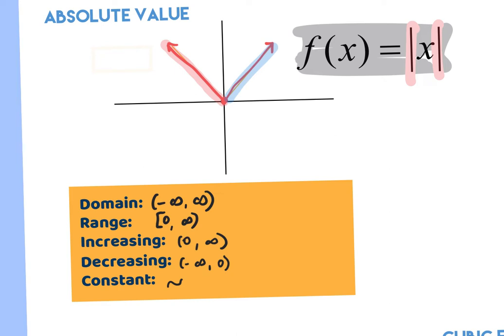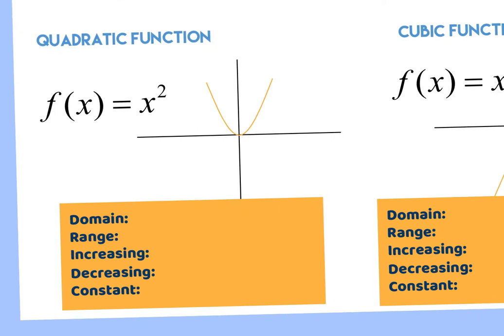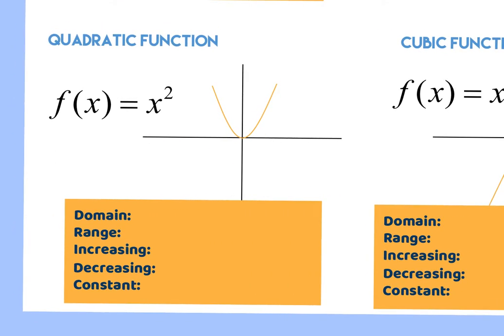Student question: why is there a bracket on the zero for range? Because zero is a point that's on the graph — it's a solid dot. If it was an open dot, that's when you'd use parentheses. But you won't get open dots on any parent functions. The next parent function is the quadratic function, or parabola — x squared. The vertex is at zero, zero with arrows at the ends.